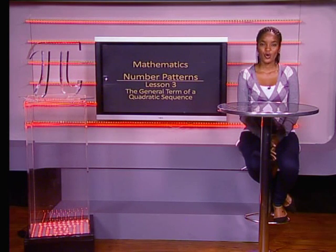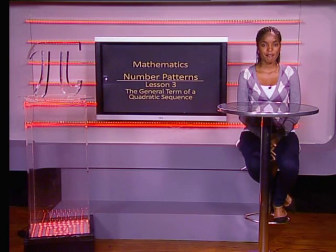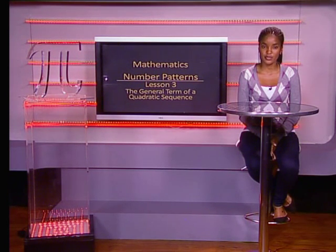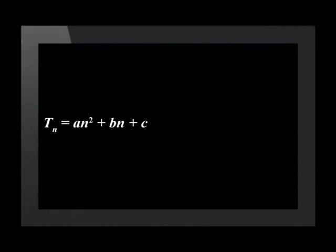Hello everyone. We continue our work on quadratic sequences by finding the general term, or nth term, of a quadratic sequence. A quadratic sequence is generated by the formula Tn equals An squared plus Bn plus C. Tn is called the nth term, or the general term.